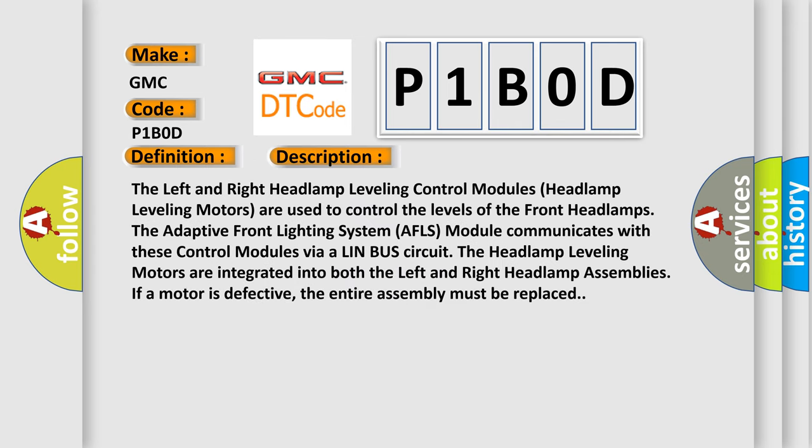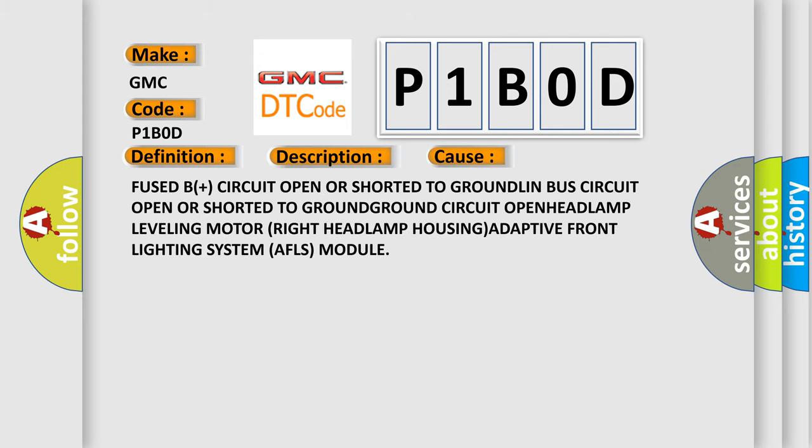The left and right headlamp leveling control module's headlamp leveling motors are used to control the levels of the front headlamps. The adaptive front lighting system AFLS module communicates with these control modules via a LIN bus circuit. The headlamp leveling motors are integrated into both the left and right headlamp assemblies. If a motor is defective, the entire assembly must be replaced.